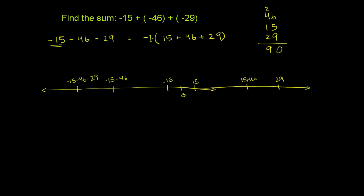So this part right over here evaluates to 90. Now, this answer is not 90. 90 would be if these were all the positive versions. So if we had 15 added to 46 to 29, that would give us, get us to 90.